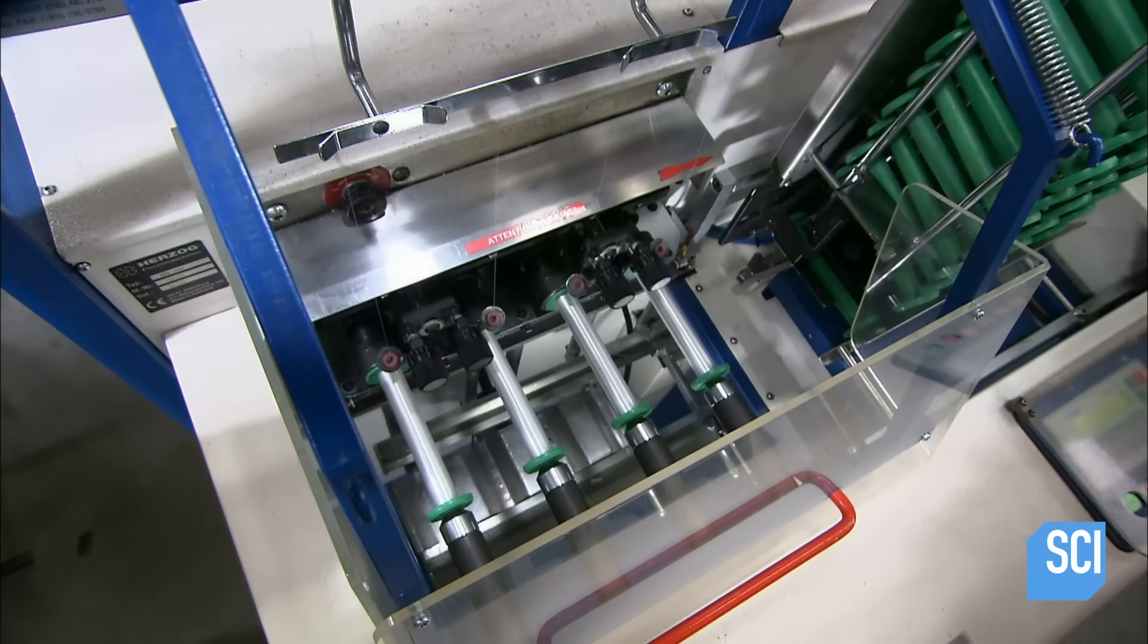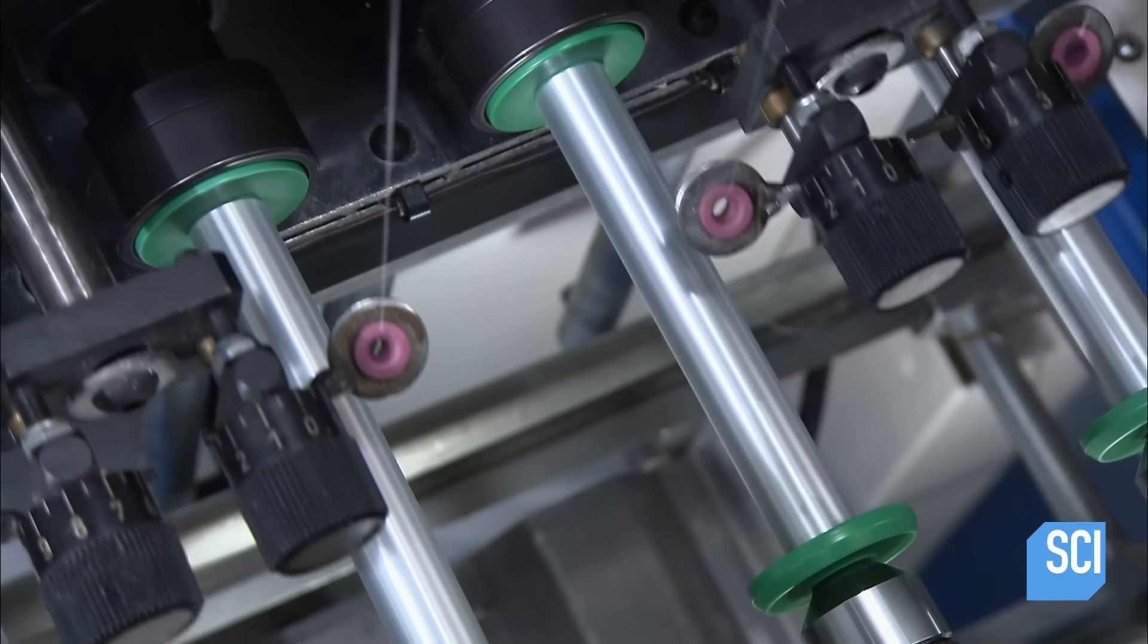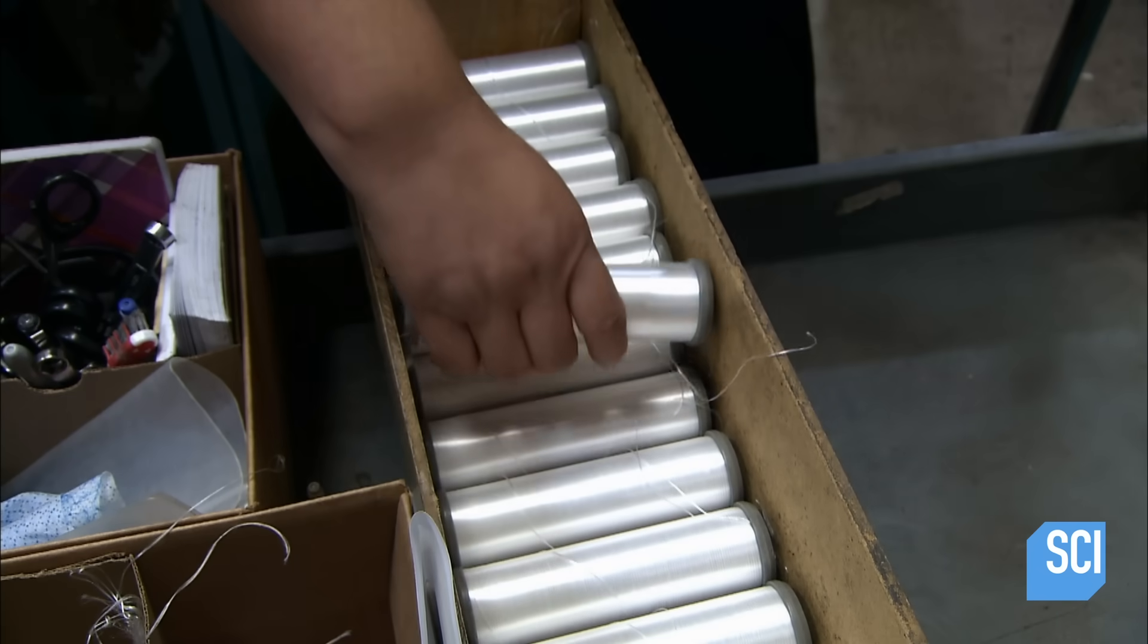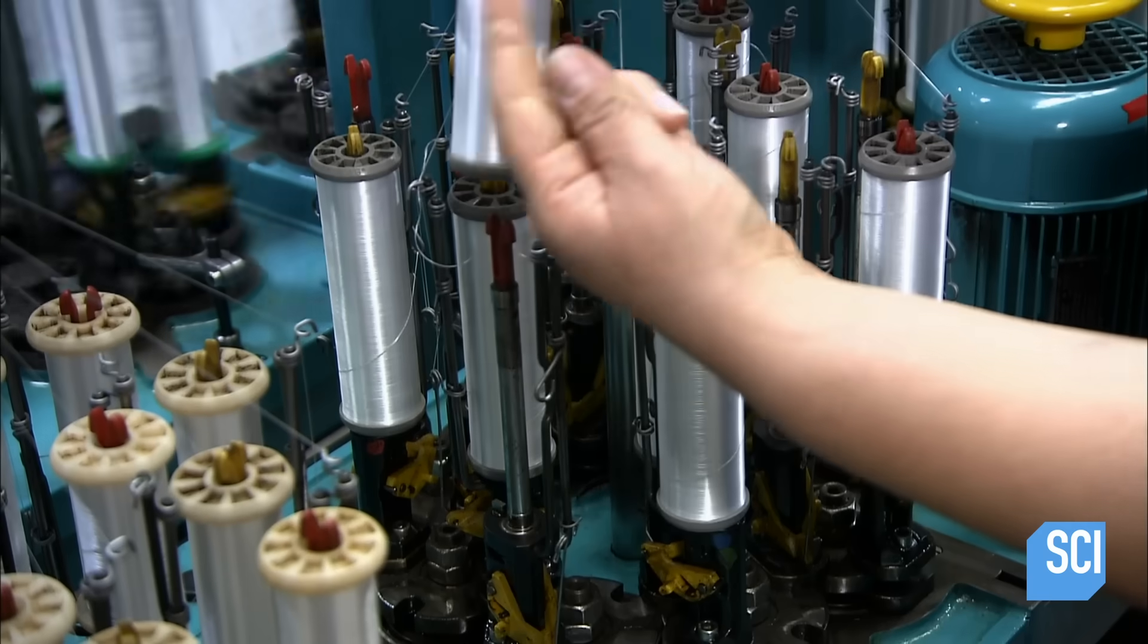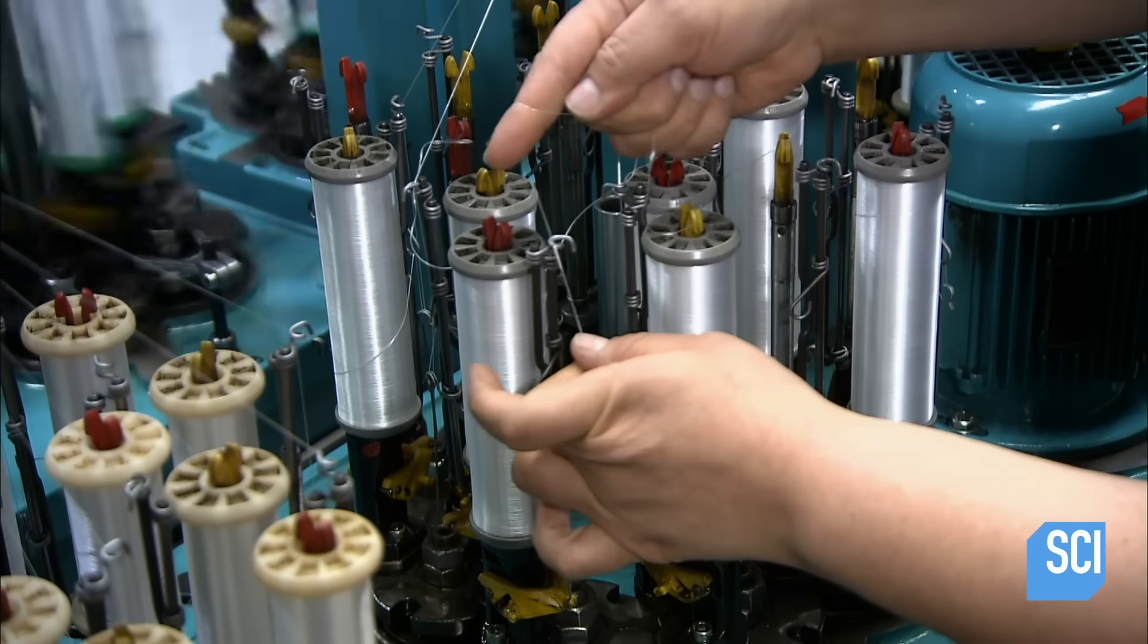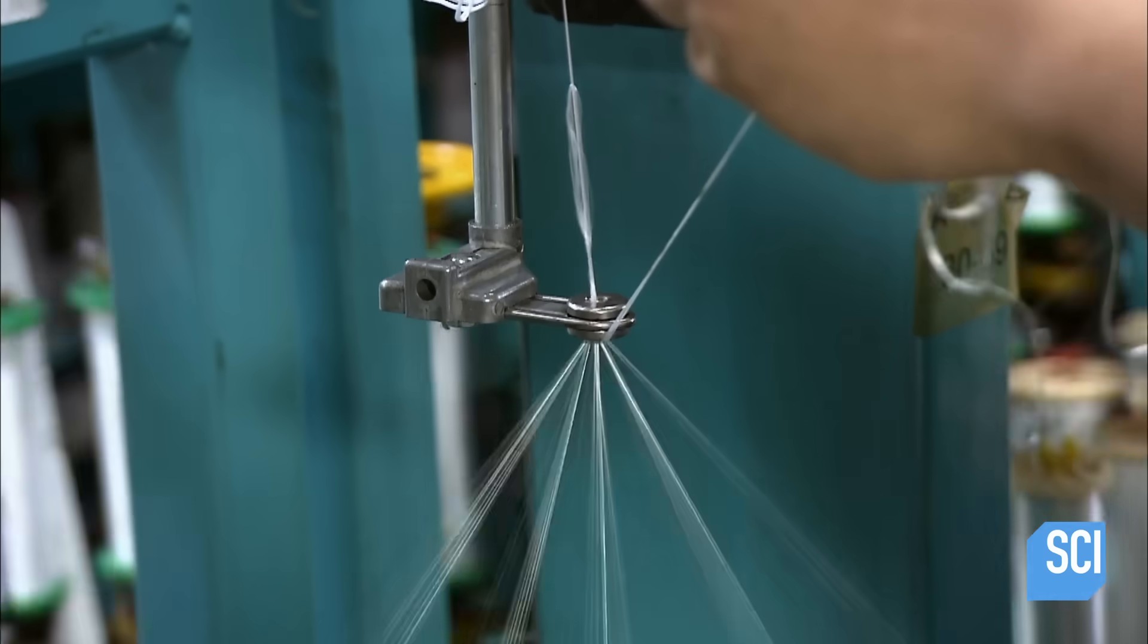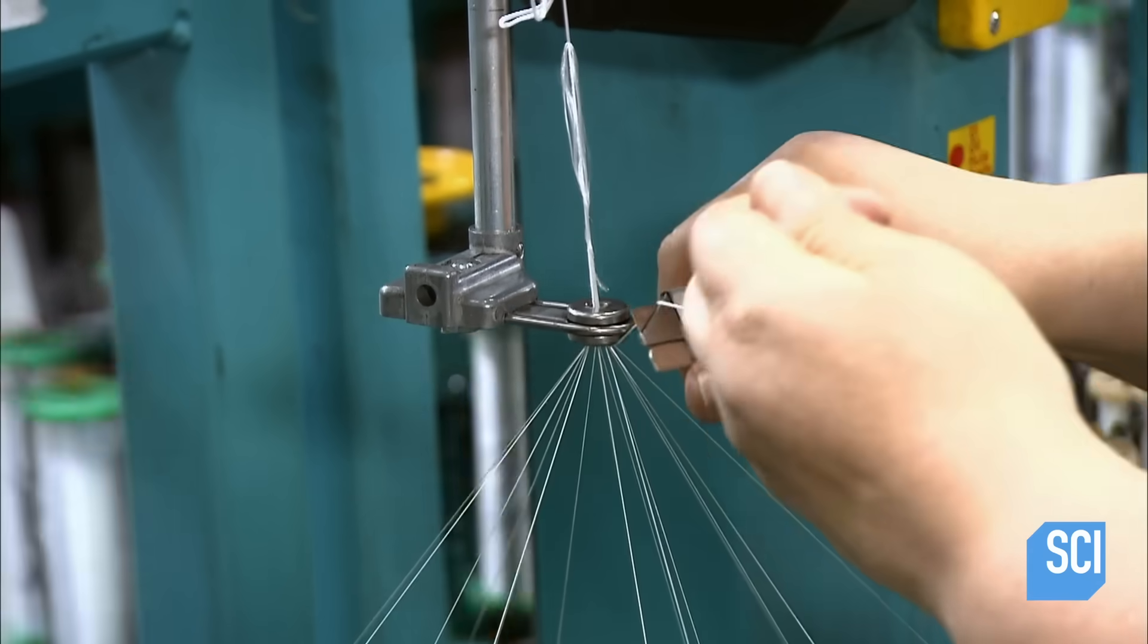These bobbins are designed to fit in the braiding machines. The machines are called maypole braiders because the spools spin like dancers around a maypole. As they spin, they weave the strands into a tight braid.